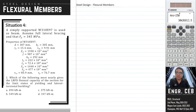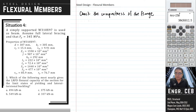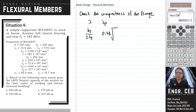Let us check if the section is compact. Although it is already indicated in the problem, what limit states are we going to investigate? Let us check first the compactness of the section — specifically the compactness of the flange. When checking the compactness of the flange, we are comparing lambda to lambda sub p. Lambda is b_f over 2t_f, while lambda sub p is 0.38 times the square root of E over Fy.